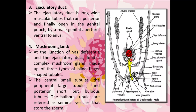The seminal vesicles are the short bulbous tubules visible in red in the diagram. Their function is to store the mature sperms. These sperms come from the testes through the vas deferentia and are stored in the seminal vesicles within the mushroom gland.